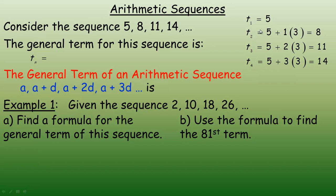Notice that I could think of this: the first term is 5. The difference between 5 and 8 is 3 — it's going up by 3. So the second term, the 8, could be written as 5 plus 1 three. The 11, the third term, would be 5 plus 2 threes. 2 times 3 is 6, and 6 plus 5 is 11.